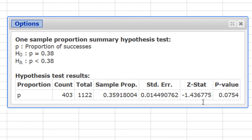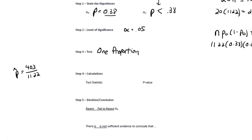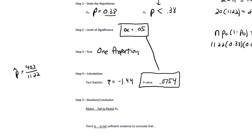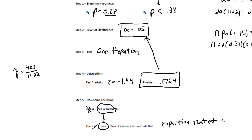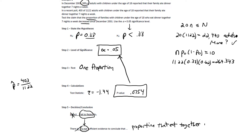The test statistic is Z equals negative 1.44, and the p-value is 0.0754. Comparing that p-value to alpha equals 0.05, it is not less than 0.05, so we fail to reject the null hypothesis. That means there is not sufficient evidence to conclude that H1 is true — in other words, that the proportion who eat dinner together seven nights a week has decreased or is less than 38%.